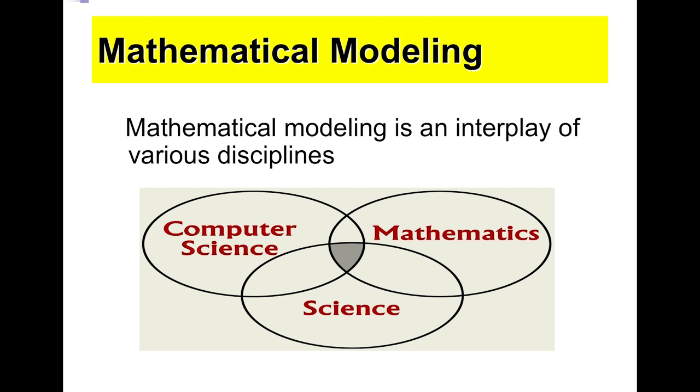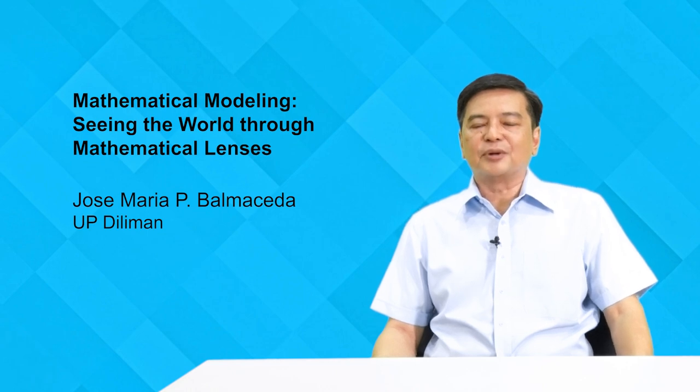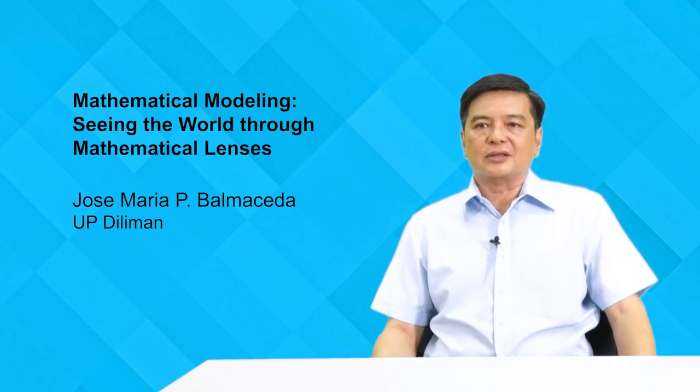Mathematical modeling is an interplay of various disciplines. Of course, you have the mathematics behind it, but you also need technology. And for that, computer science is very important. When mathematical modelers study a problem, they actually study a problem from a particular area of science or of the social sciences. It's really an interplay of these three, of various subjects.